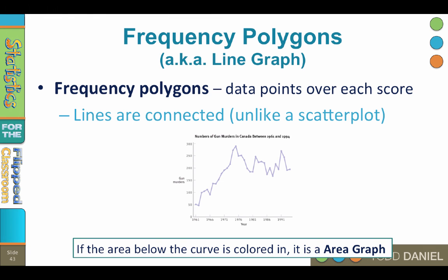A frequency polygon, also known as a line graph, is similar to a histogram, except that instead of bars, a data point is placed over each x-axis score, and then the dots are connected by a single line. Frequency polygons are used for large numbers of interval or ratio — i.e., scale level — scores. Typically, the x-axis begins one unit lower than the lowest appearing score, and frequencies are still plotted on the y-axis. As the frequency of scores goes up, you see increases in the line of the frequency polygon.